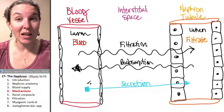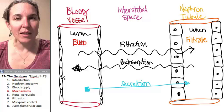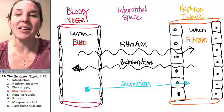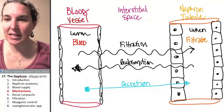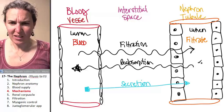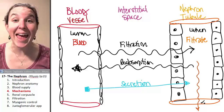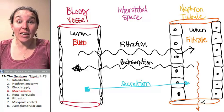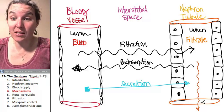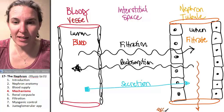Secretion happens from blood to tubule. Secretion does not happen in the opposite direction. If it happens in the opposite direction, it's reabsorption. The last process that takes place is this one. Anything that is left in the collecting duct that does not get reabsorbed back into the blood, that is going to be excreted. So this process is excretion.